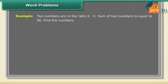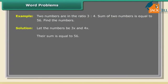Example 4: two numbers are in the ratio 3:4. The sum of the two numbers is 56. Find the numbers. Solution: let the numbers be 3x and 4x. Their sum: 7x = 56, so x = 8. The numbers are 3 × 8 = 24 and 4 × 8 = 32.